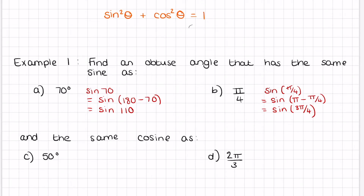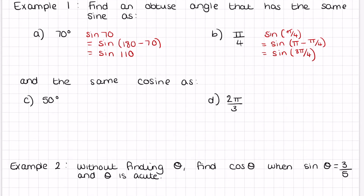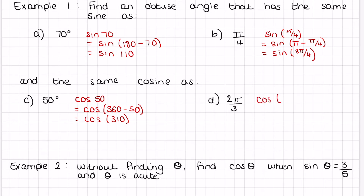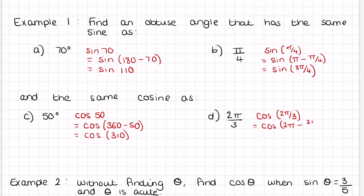We can do the same with cosine, but with cosine the two angles have to add up to 360 degrees or 2π in radians. So cos(50°) equals cos(360° − 50°), which is cos(310°). And cos(2π/3) equals cos(2π − 2π/3), which equals cos(4π/3). The main thing to remember is: for sine, the two angles add to 180; for cos, they add to 360.